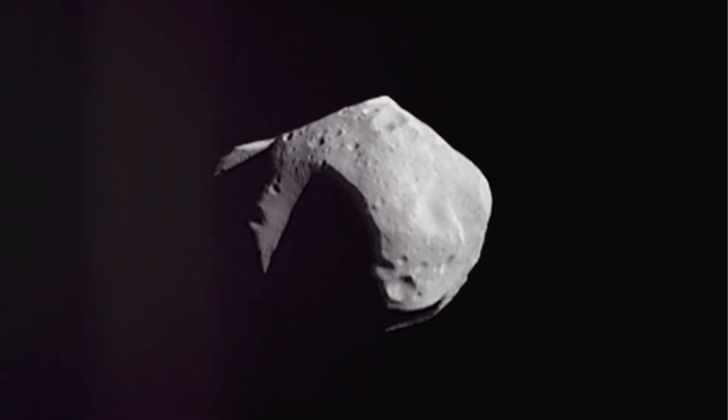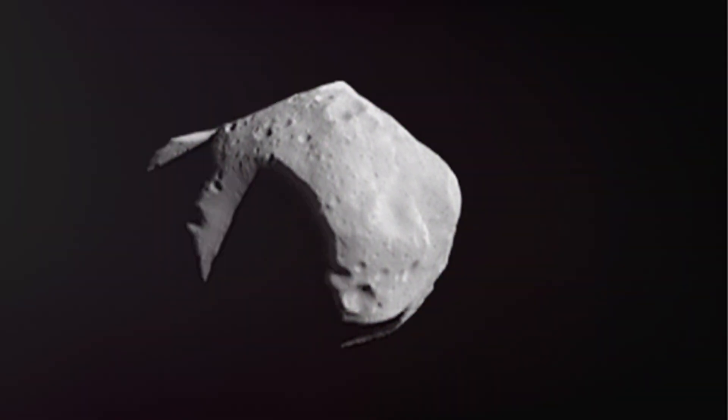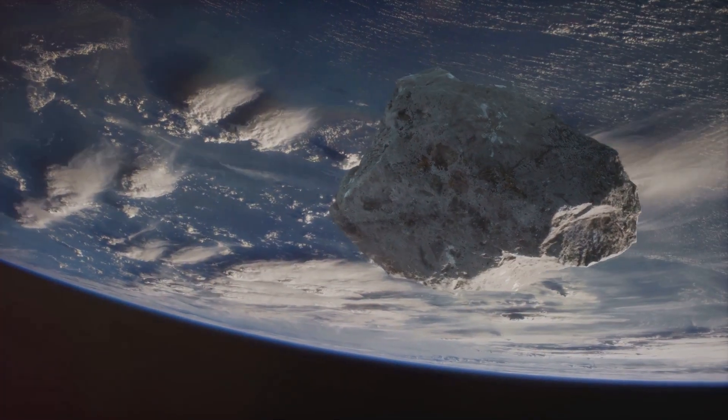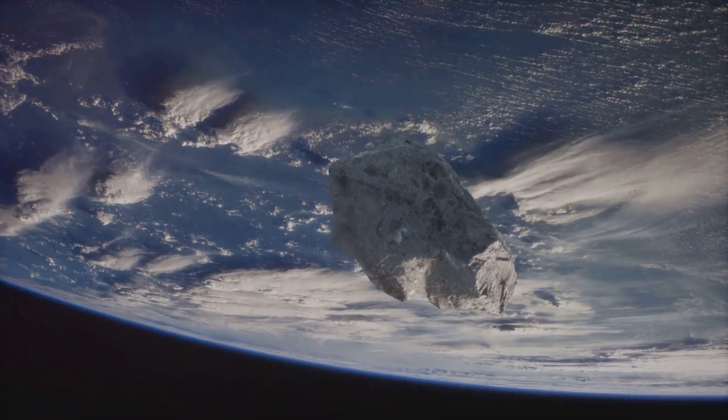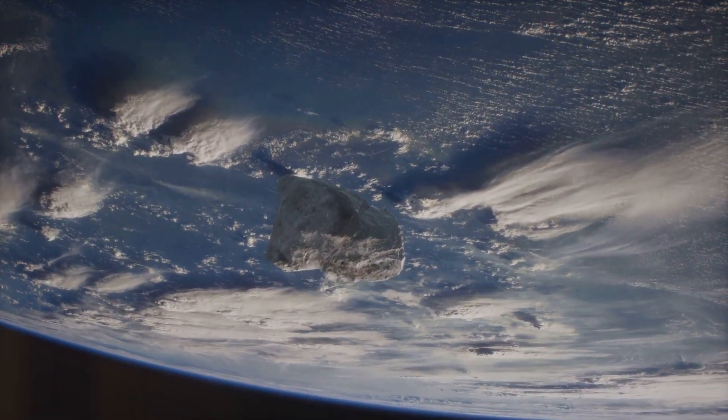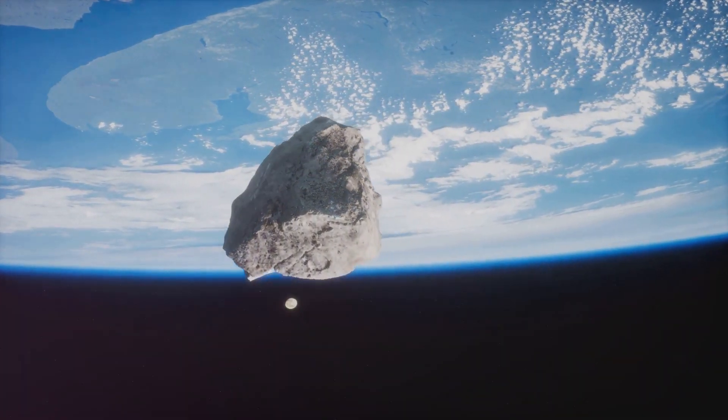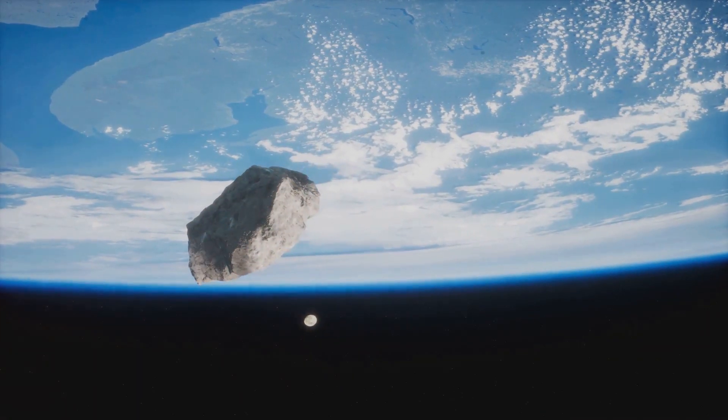Named after the ancient Egyptian god of chaos, Apophis is a near-Earth asteroid that has piqued the interest of scientists and space enthusiasts alike. Why is there so much attention being paid to this particular asteroid? That is because it has been on our radar since 2004, when it was first discovered.